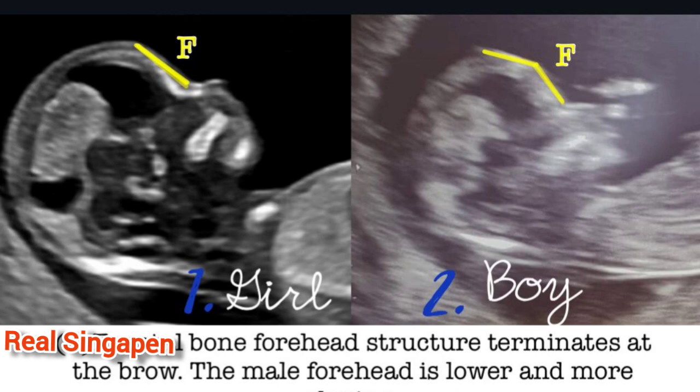First, we have to note the image. We have to look at the image. There is a straight code in the scan report — that is a girl baby. That is a little bit of a picture. Second image, this is a boy baby. Why? Straight code in the girl baby — it is a little bit of a girl baby.